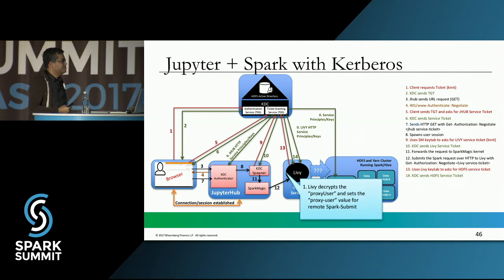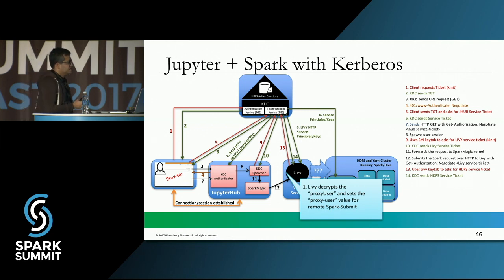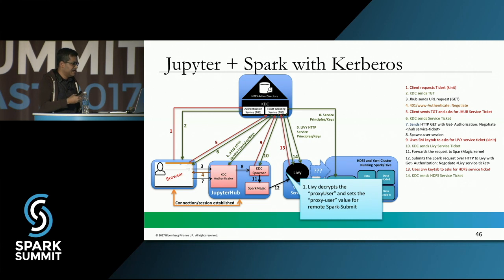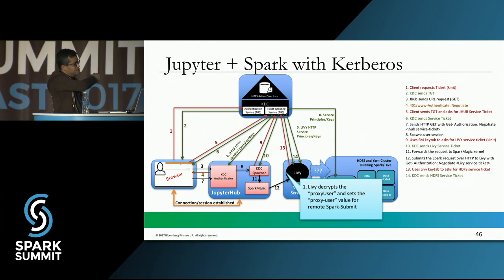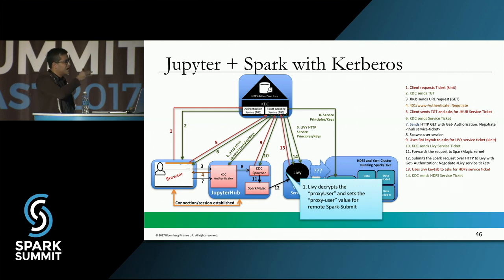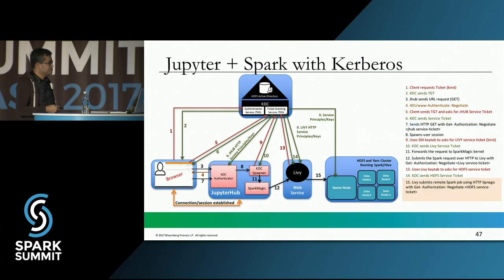Once Livy gets its ticket from the Ticket Granting Service to authenticate against HDFS, it decrypts the proxy user. When doing a Spark submit, there is a parameter called proxy user which can be set. With the proxy user set, the Livy super user can impersonate that particular logged-in user. This is how the whole communication works.